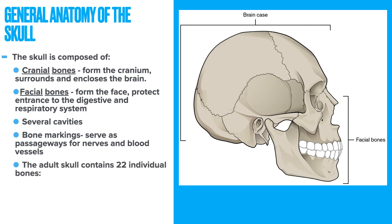The adult skull contains about 22 individual bones. Twenty-one of those bones are immobile. The 22nd bone, the mandible or lower jaw, is the only one that's actually movable on the skull.